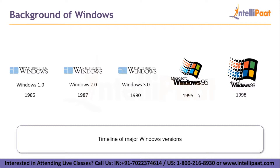Windows 2.0 was released in 1987. It adds some changes to the user interface and memory management. It was more successful than its predecessor. It introduced overlapping features like overlapping windows and sophisticated keyboard shortcuts. Windows 3.0 was released in 1990. It was more commercially successful, mainly because it allowed the sharing of arbitrary devices among its applications. It introduced a protected mode — an operational mode that allows system software to use features like virtual memory, paging and safe multitasking.